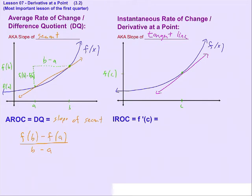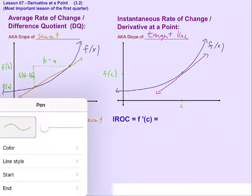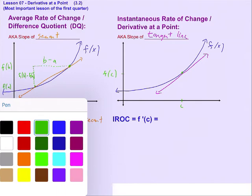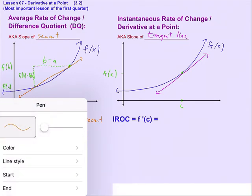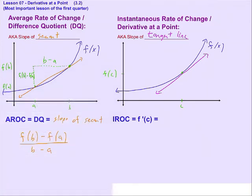So we're going to do something very, very, very clever. We are going to talk about or pretend that there was another point on here. So c is a constant. We're talking about the instantaneous rate of change at one specific value. That value is not going to change throughout our problem.